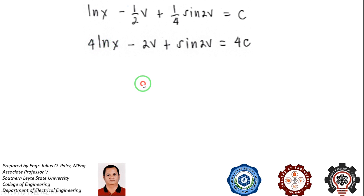Using properties of logarithm, substituting v equal to y over x, the resulting equation will be this one. For C, we'll just reduce it to C because this is also a constant.